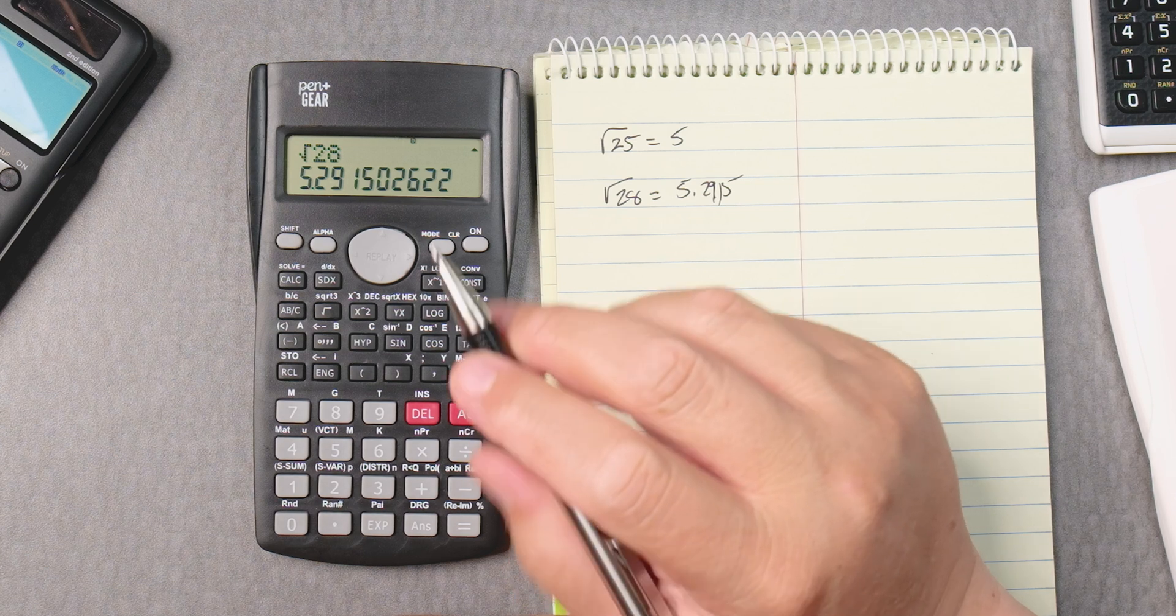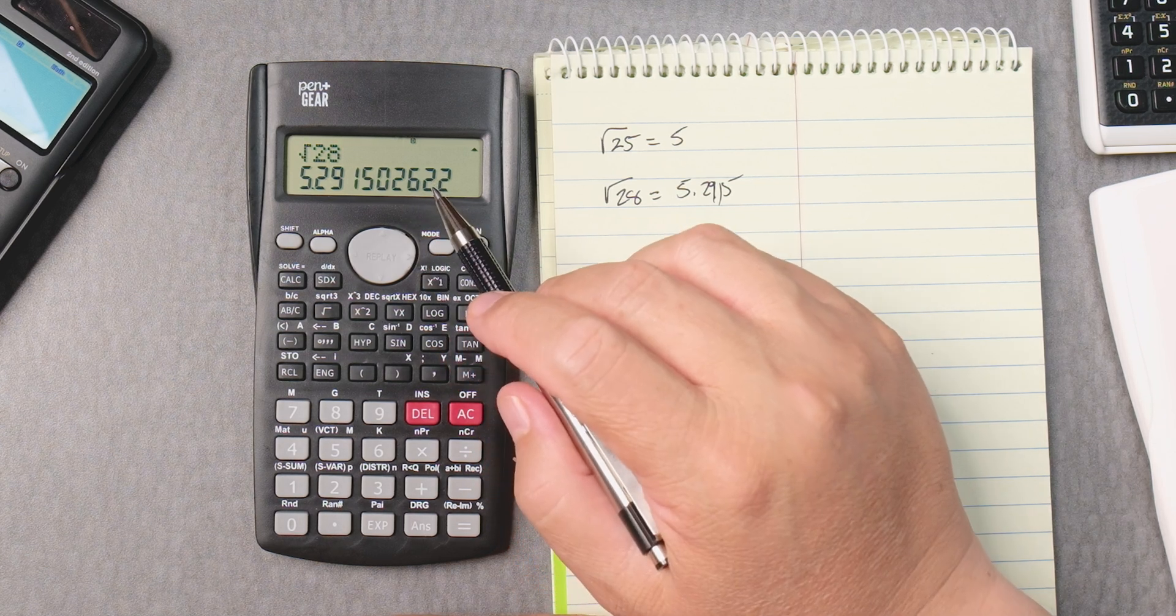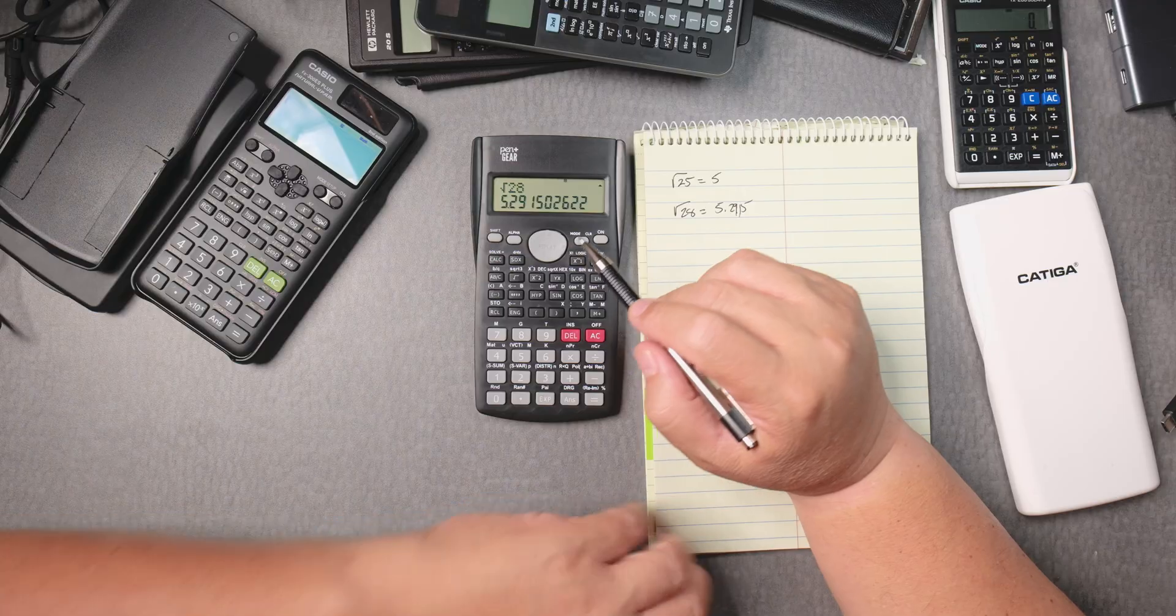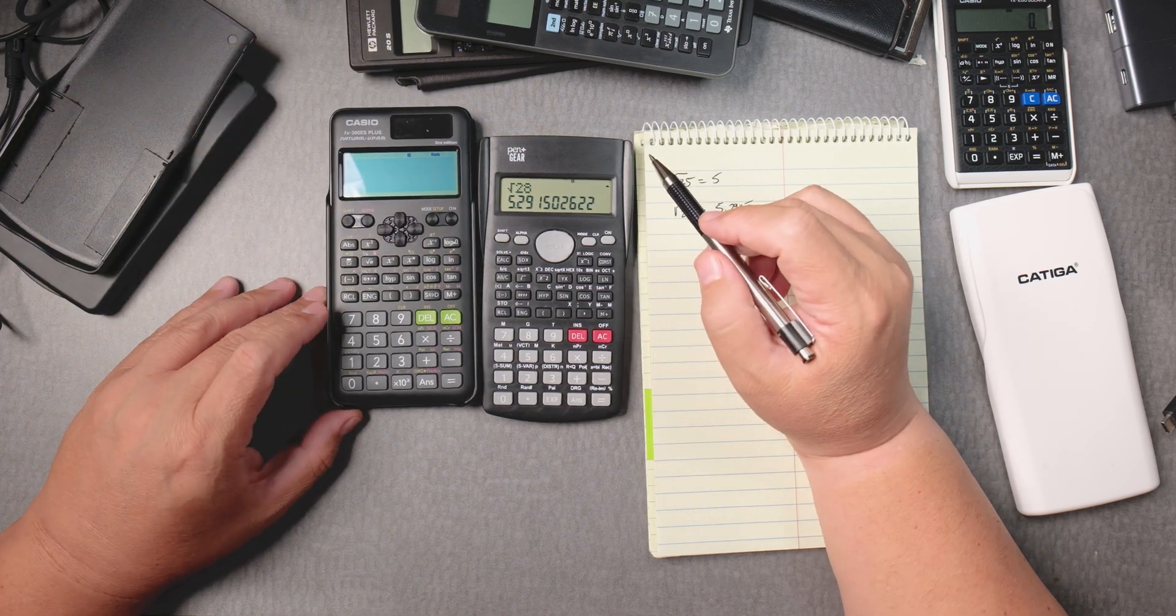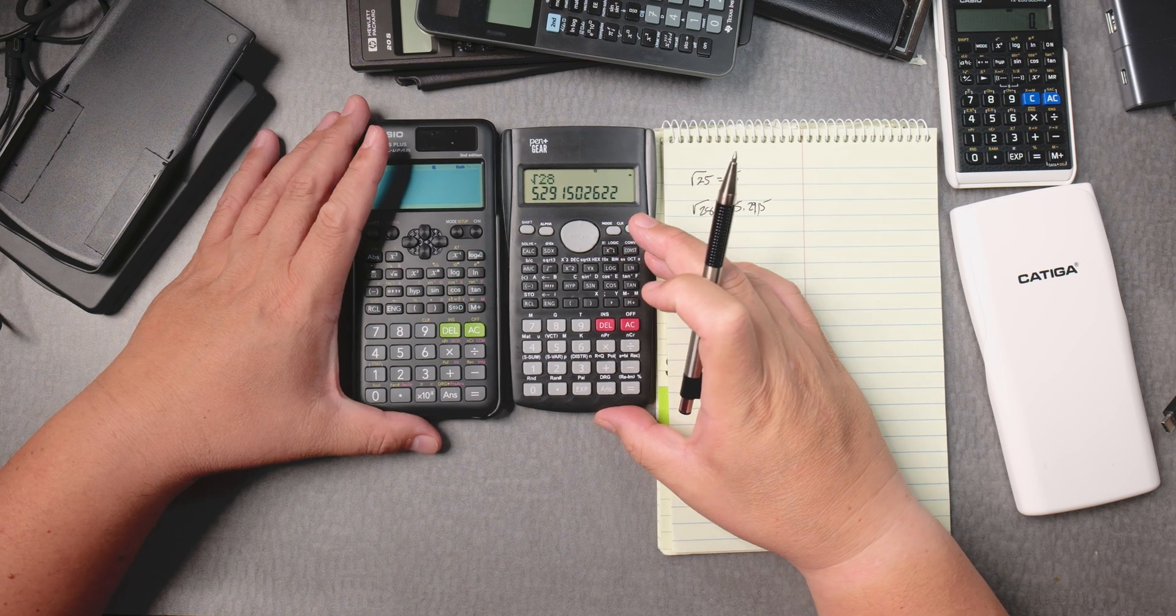Okay, now this calculator won't simplify your radical, not like this, right? Now this calculator, which is a Casio, which looks really similar.